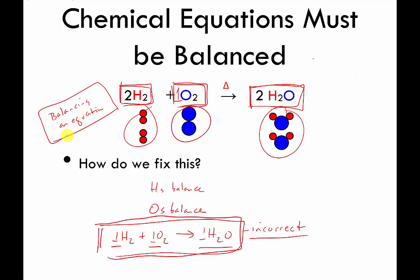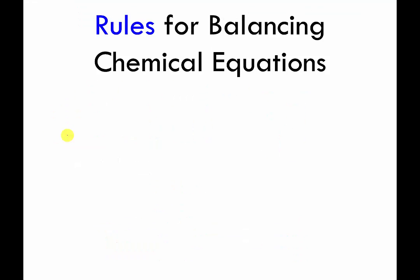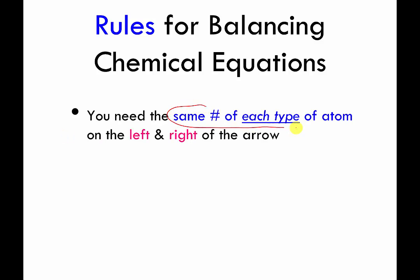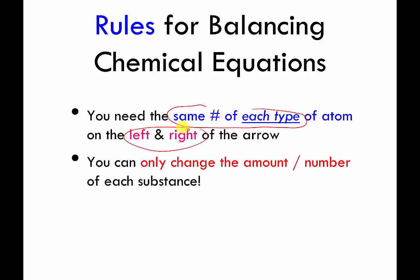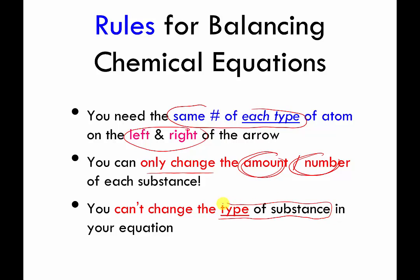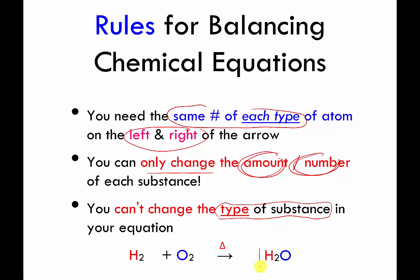We're going to do a fair amount of this in the coming videos. Here are the rules for balancing equations: you need the same number of each type of atom on the left and right side of the arrow, and you can only change the number in front of each formula. You can't change the type of material, you can't add new materials, and you can't subtract any materials already written. Those are the basics for balancing chemical equations. In the next video you'll do some practice in balancing.